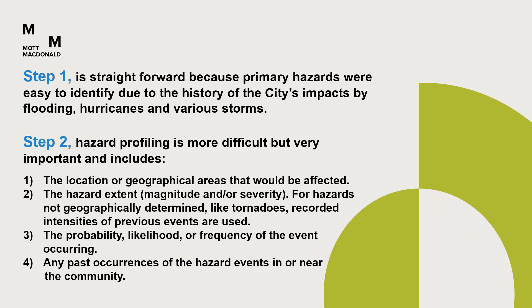Step one is straightforward because primary hazards were easy to identify due to the history of the city's impacts by flooding, hurricanes, and various storms. Step two, hazard profiling, is more difficult but very important. It includes: one, the location or geographic areas that would be affected; two, the hazard extent, magnitude, and/or severity — for hazards not geographically determined like tornadoes, recorded intensities of previous events are used; three, the probability, likelihood, or frequency of the event occurring; and four, any past occurrence of the hazard events in or near the community.